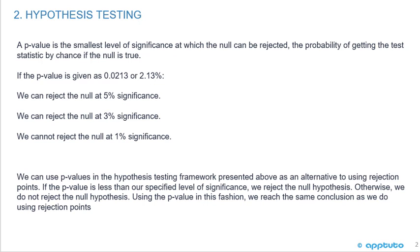A p-value is the smallest level of significance at which the null can be rejected, the probability of getting the test statistic by chance if the null is true.